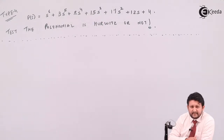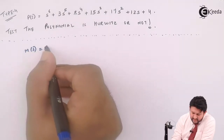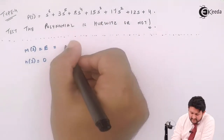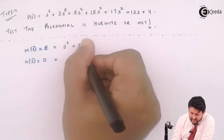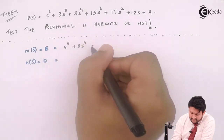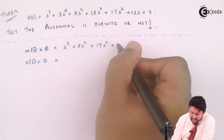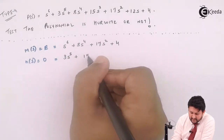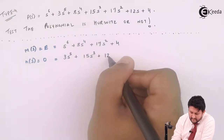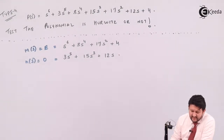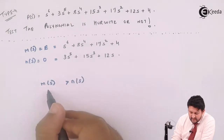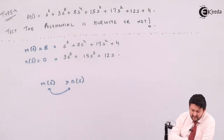So now, let's divide the above equation into two parts: even powers and odd powers. For even, write the term: s⁶ + 8s⁴ + 17s² + 4. For odd powers: 3s⁵ + 15s³ + xs. After getting the terms, decide which power is higher — m(s) is greater, so we will divide m(s) with respect to the other m(s).